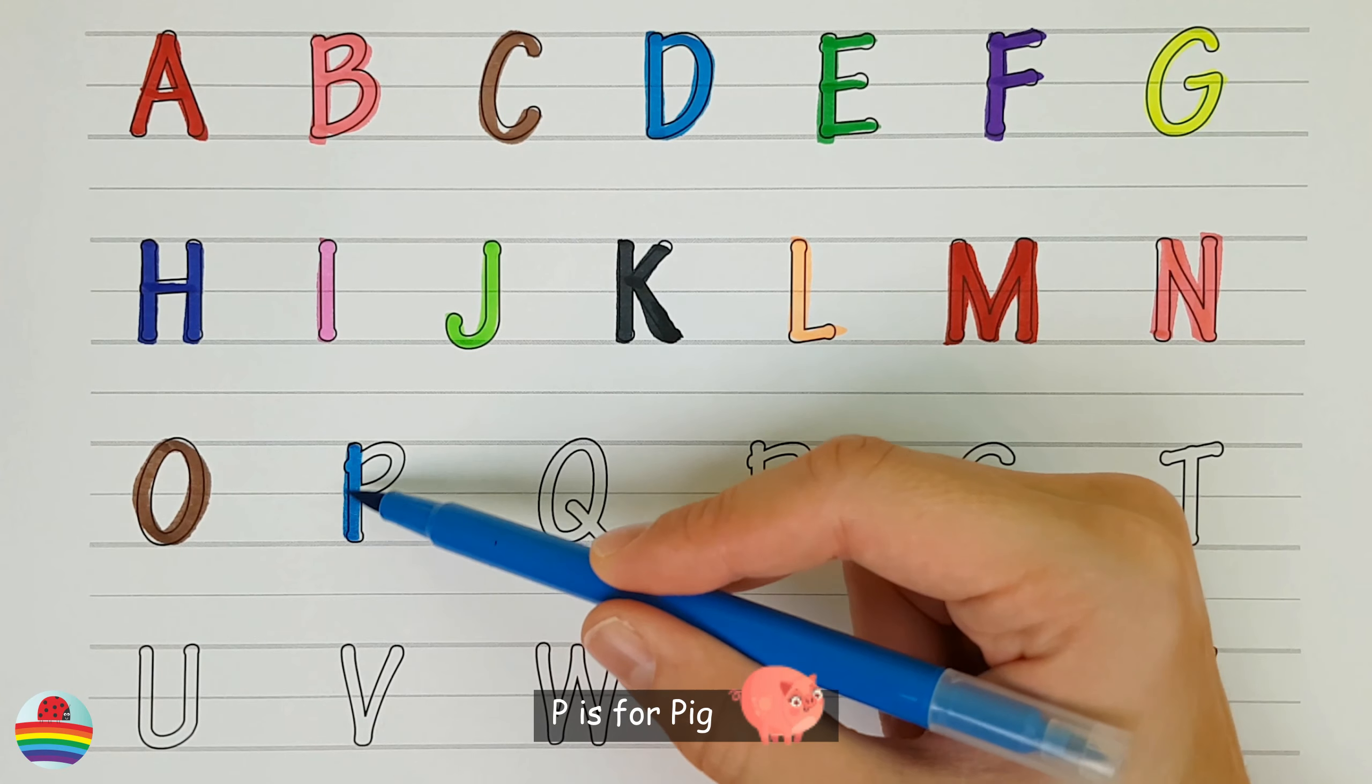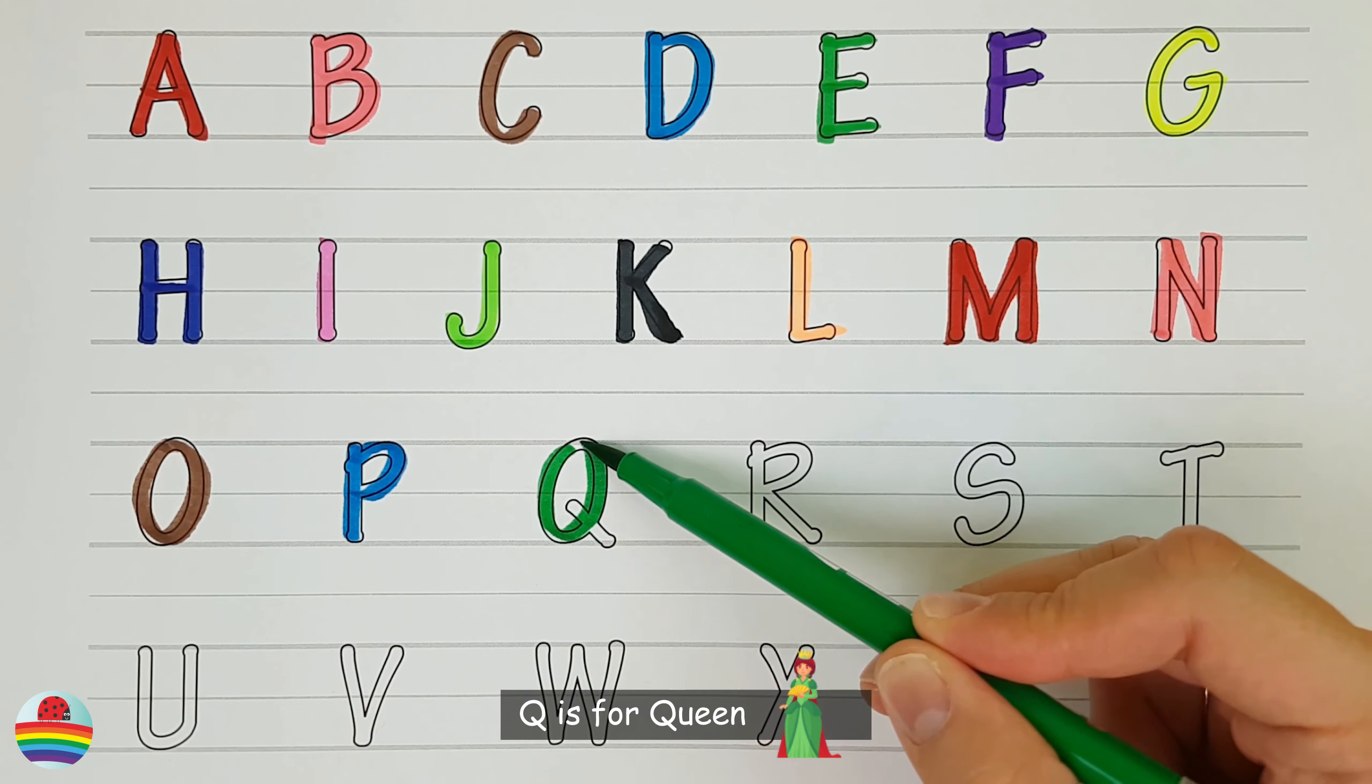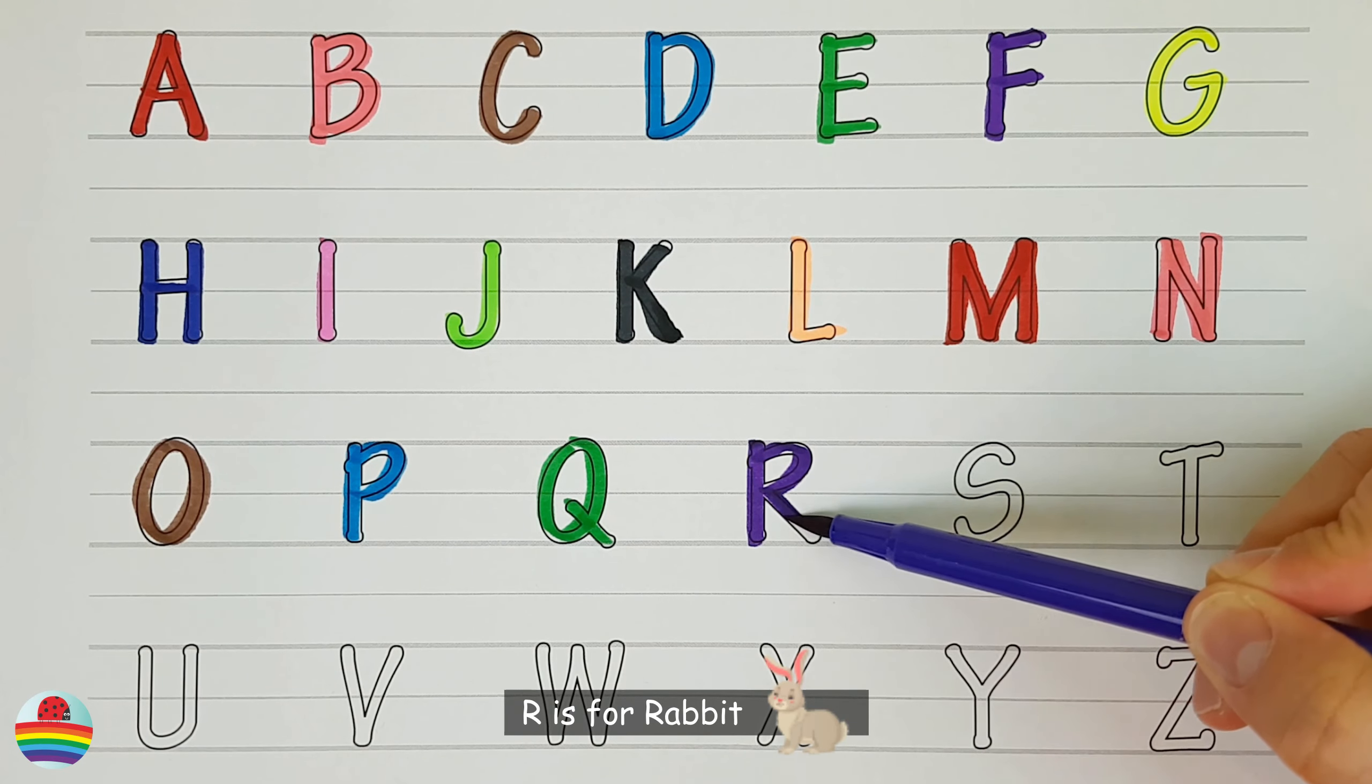P. P is for Pig. P. Q. Q is for Queen. Q. R. R is for Rabbit. R.